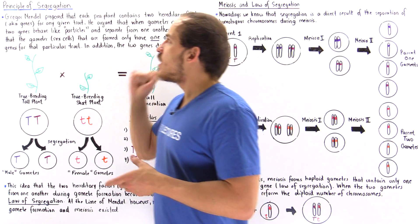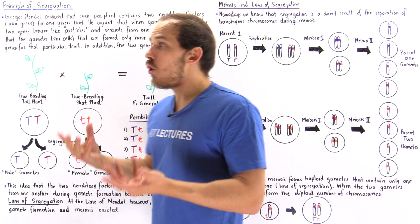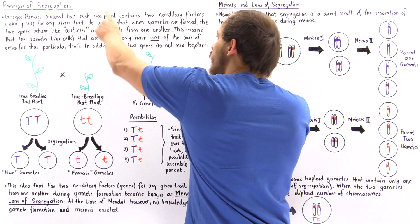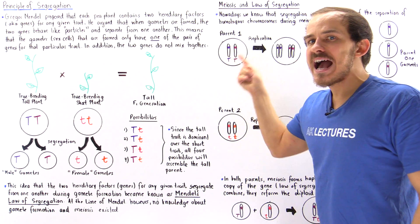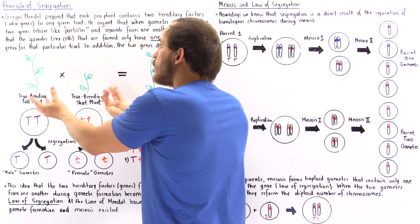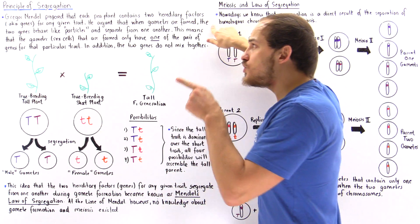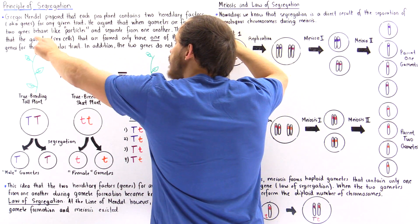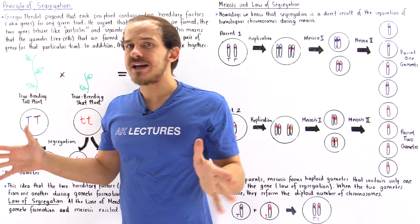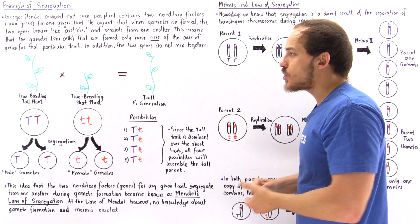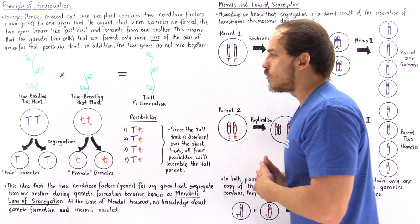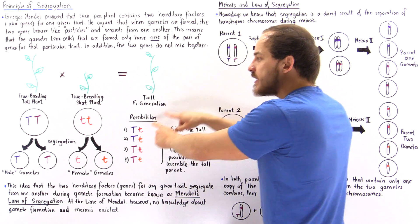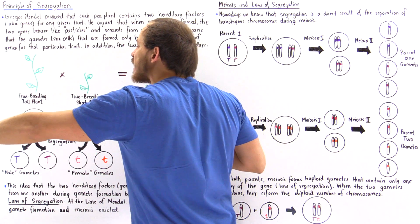What Mendel proposed next was the principle of segregation, also known as the Law of Segregation or Mendel's Law of Segregation. He argued that whenever gametes are formed, before the mating process takes place, the two genes that code for the same trait — in this case height — behave like particles and actually separate during the process of gamete formation.